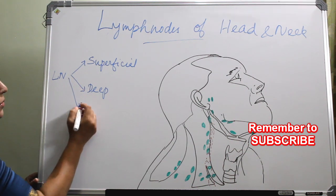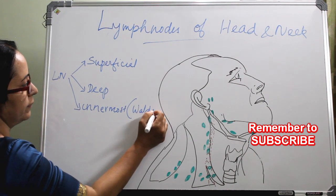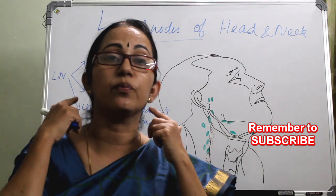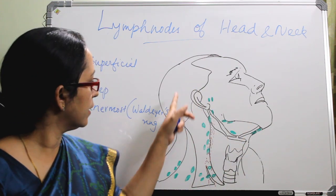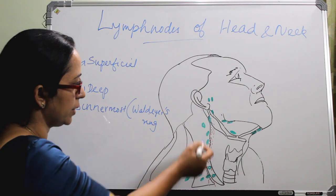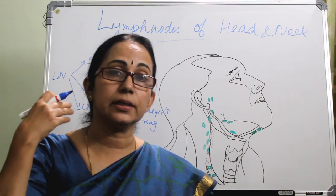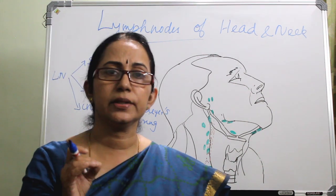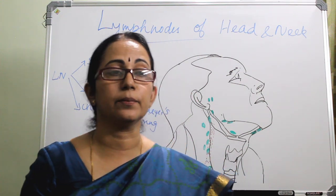The superficial lymphatics form a regional collar from below the chin up to the back of the neck. They will perforate the cervical fascia and drain into the deep group. The superficial nodes lie along the external jugular vein, and the important one is the lateral cervical group. When the superficial nodes are involved in malignancy, they require skin resection along with an extended neck resection.